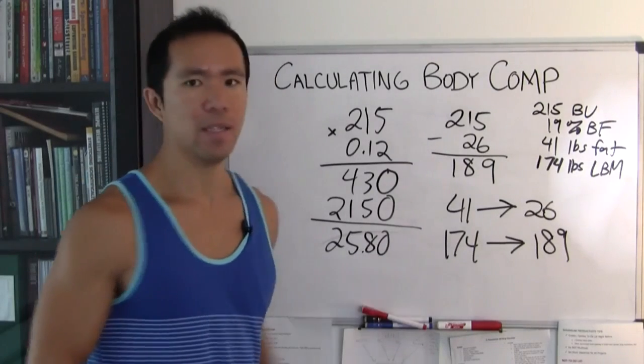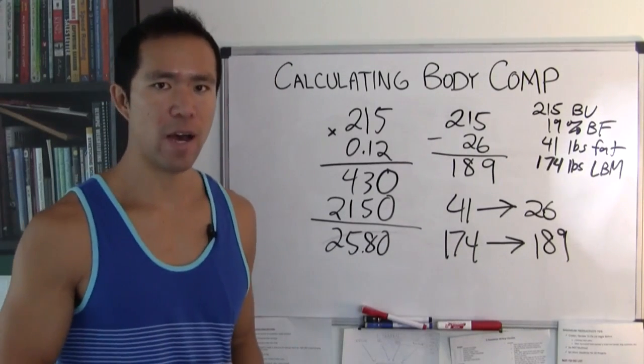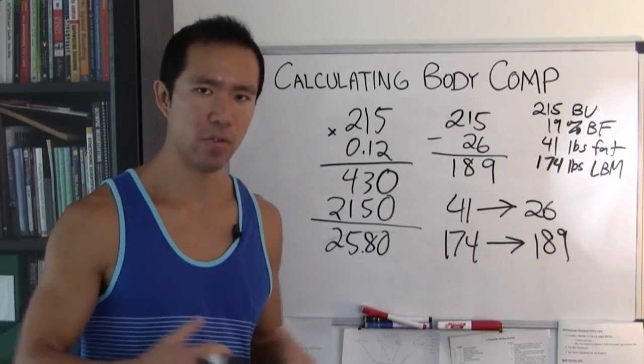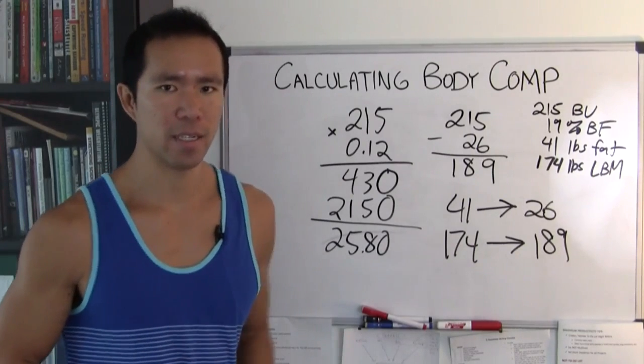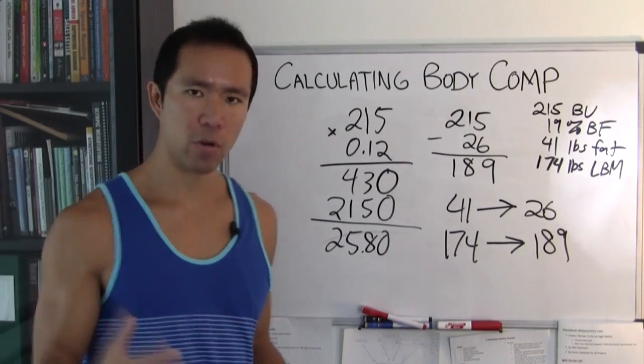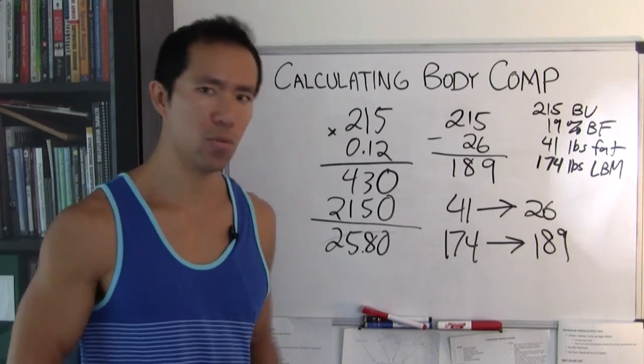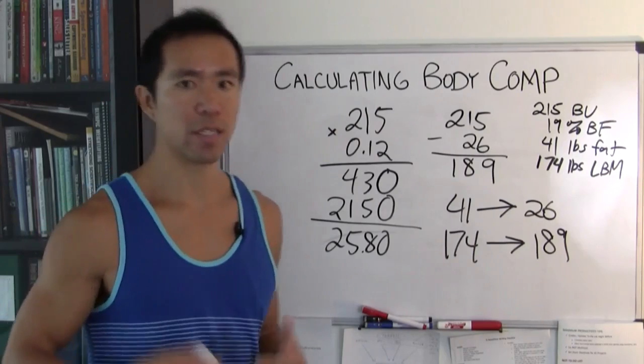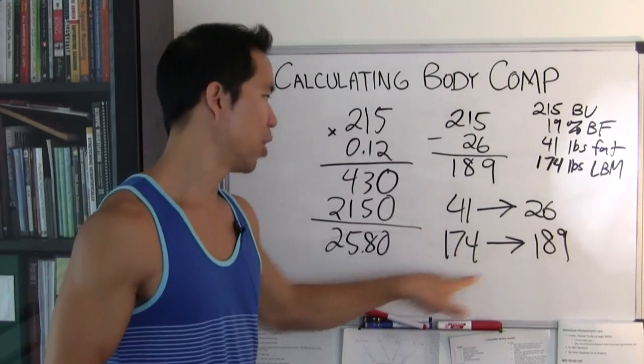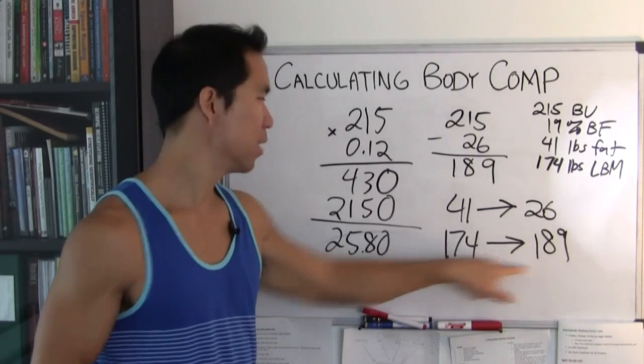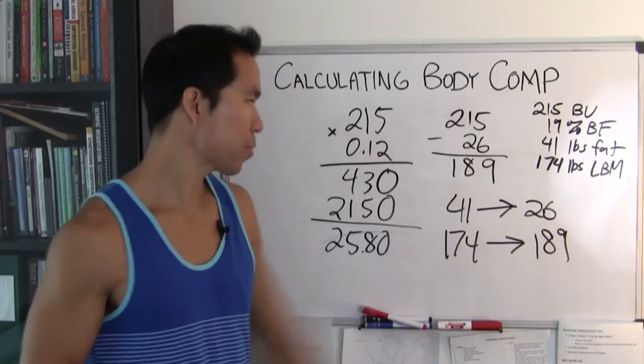Now, what I would recommend is if you've been losing body fat consistently for a while and now you've kind of plateaued, you said you're stuck at 19%, you kind of focus more on gaining some muscle for a little bit for the next phase. Maybe for the next 2 months, 2 and a half months, you focus on gaining muscle. So chopping away at this that you need, you need to gain 15 pounds of muscle.